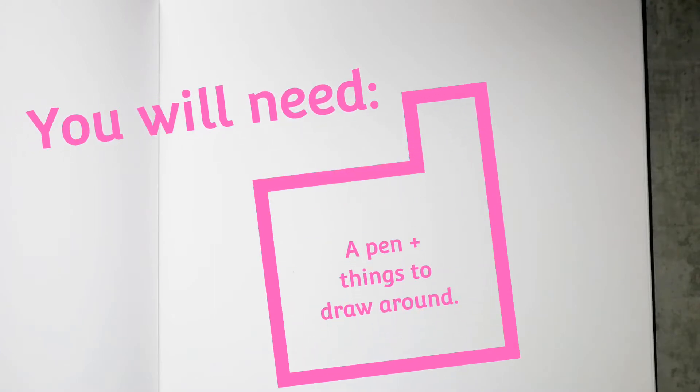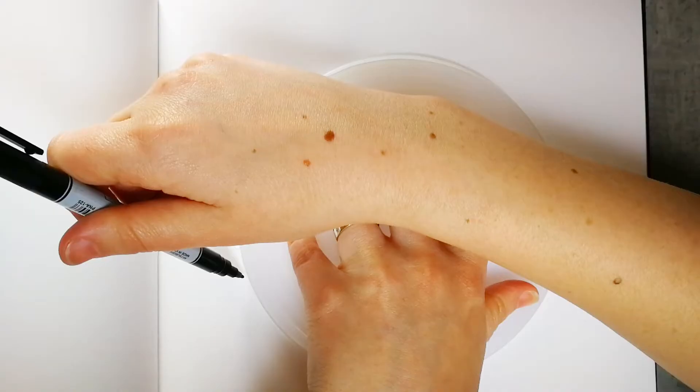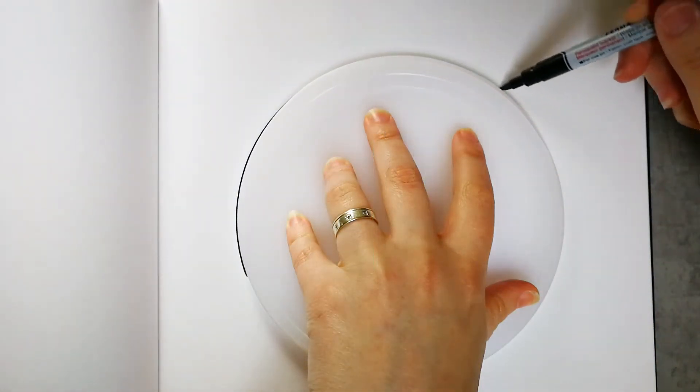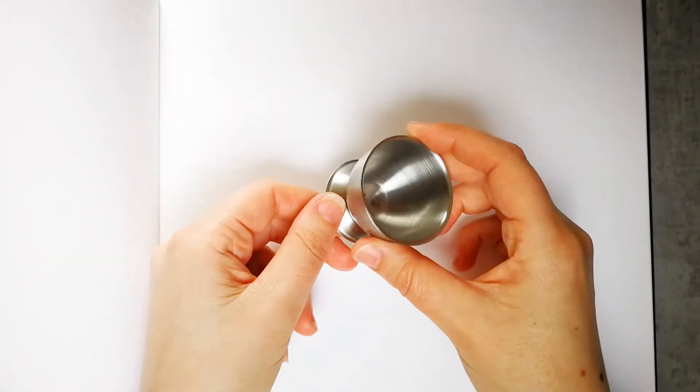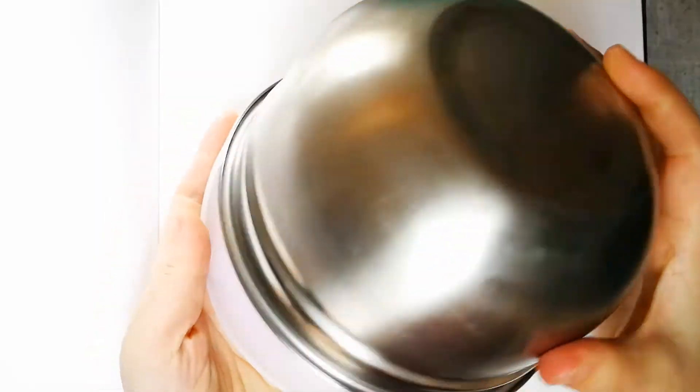All you need today is a pen, a piece of paper, and a selection of different sized circular objects to draw around. So press pause now and go have a rummage through your kitchen cupboards to see what you can find. I'm using a cap from a juice carton, an egg cup, a glass, and a steel bowl that comes with a lid.